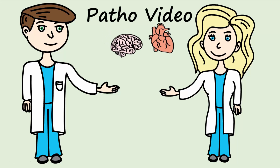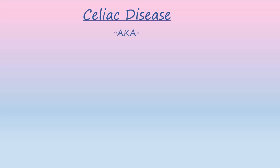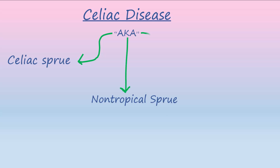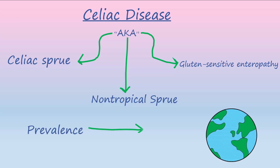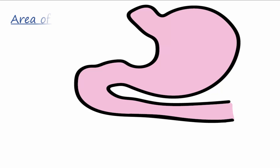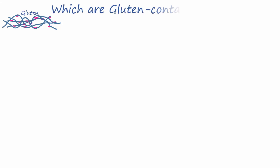Welcome to another patho video. Today let's talk about celiac disease. Celiac disease is known by several different names including celiac sprue, non-tropical sprue, and gluten-sensitive enteropathy. It is one of the most common genetic diseases worldwide with a prevalence of about 1%. The part of the gastrointestinal tract most affected is the duodenum and proximal jejunum.